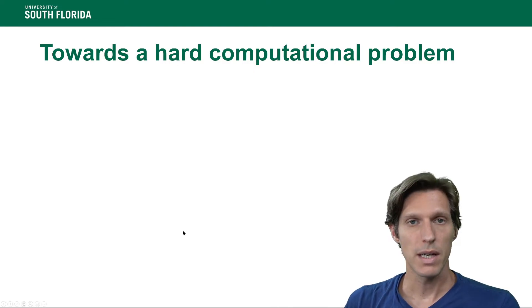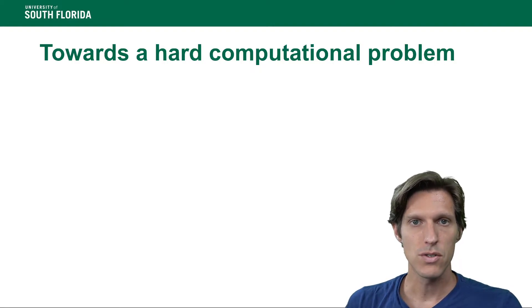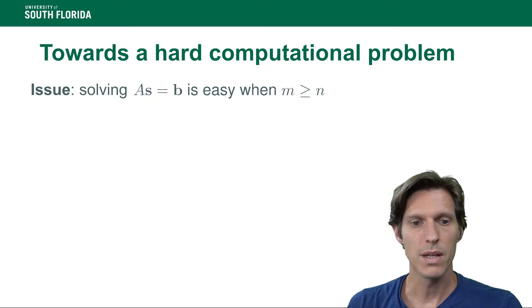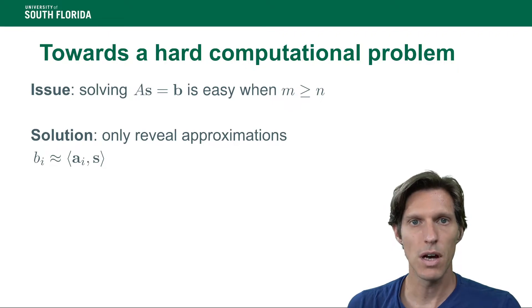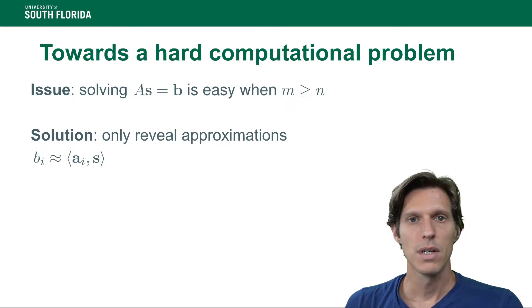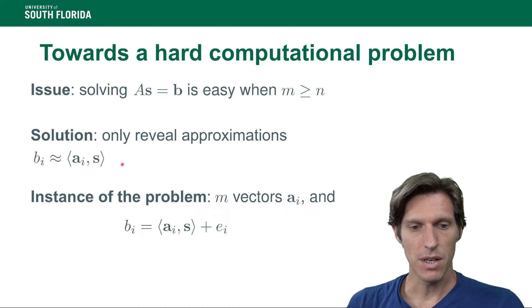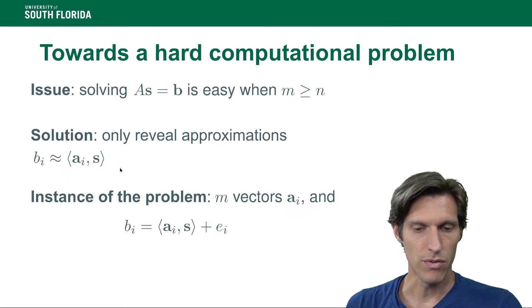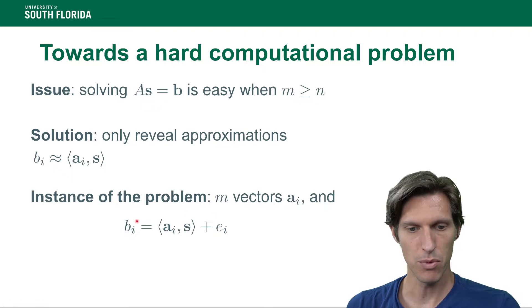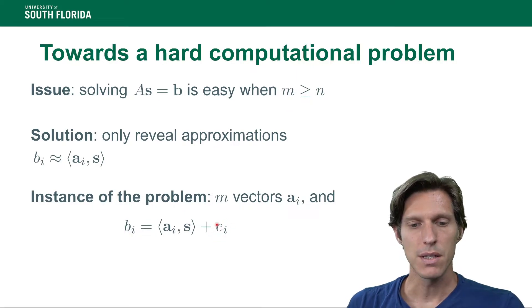So like I said before, this is not a hard computational problem. So the question is how to turn this whole idea of this whole learning problem into a hard one. And so the answer is to instead of giving away exact values that are inner products between ai's and s, instead we give approximations of it. So we draw a vector of errors, and then we only give away approximations of this for a secret error that we do not reveal.